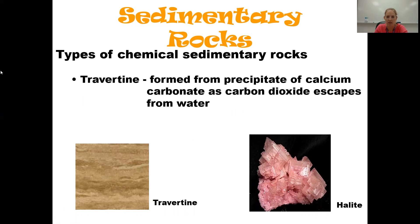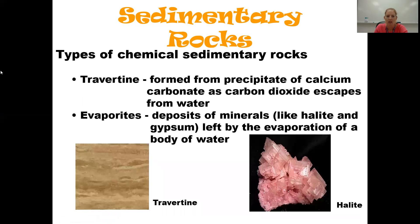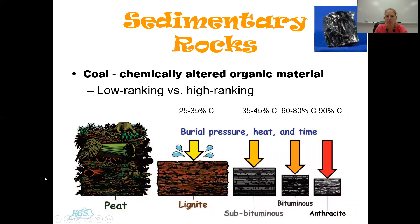Travertine forms because carbon dioxide that was once dissolved in the water escapes, leaving the calcium carbonate behind as travertine. Another category is evaporites — deposits left behind when water evaporates, consisting of minerals like halite and gypsum. Coal is another chemical sedimentary rock; different types increase in carbon content from left to right, and higher carbon means better electrical output when used for energy. Higher-ranking coal forms under more heat, pressure, and time.